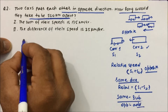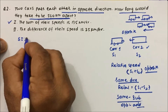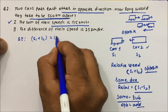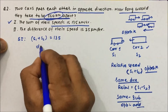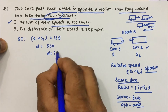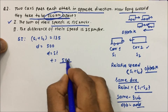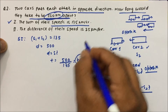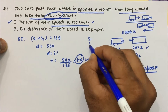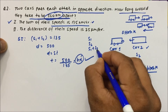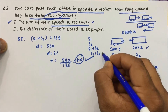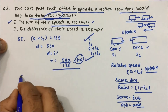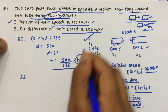Now for Statement 1: the sum of their speeds is 135 km/h, and the distance is 500 kilometers. Using d = s × t, we get t = d divided by s, which is 500 divided by 135. We don't need to actually divide since we just need to confirm sufficiency. From Statement 1, we can find the time, so Statement 1 alone is sufficient.